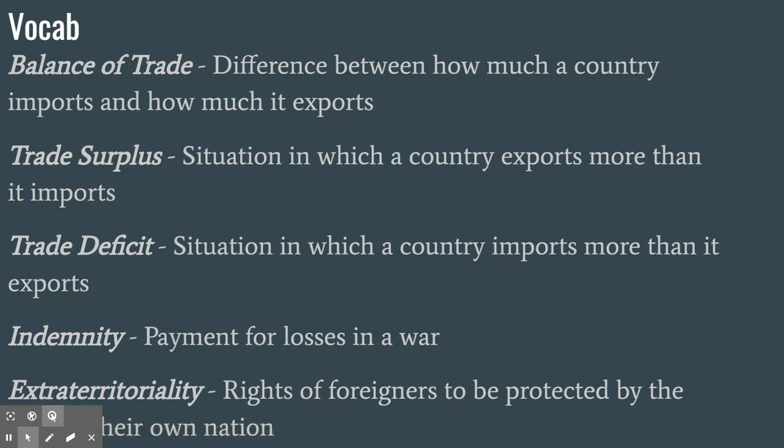The vocabulary for this section is important because it contains a lot of terms you've probably never heard before. The first one is balance of trade — this is the difference between how much a country exports, which is sells, and imports, which is buys. A trade surplus is where a country is exporting more things than it's importing, which means a country is making money — it's selling more than it's buying.